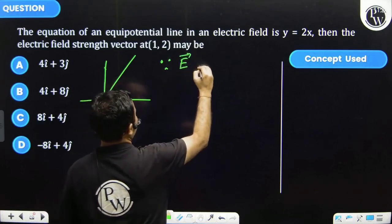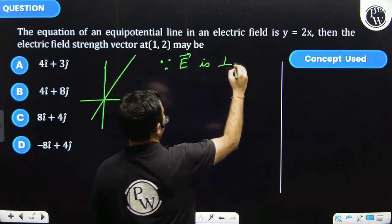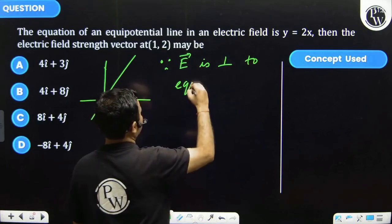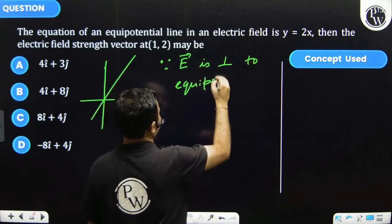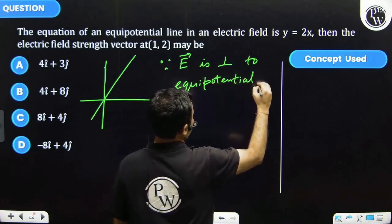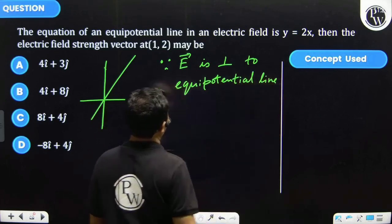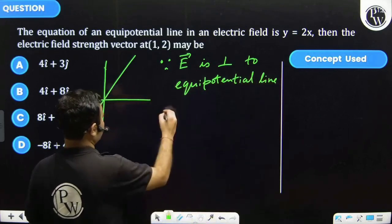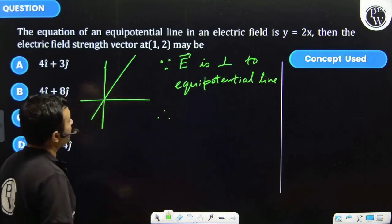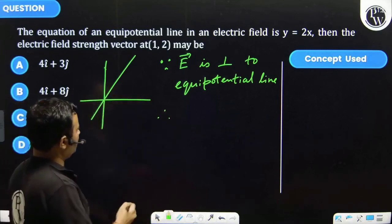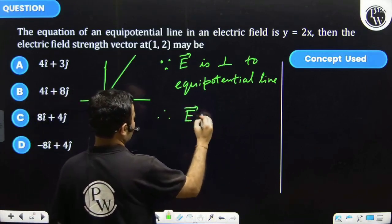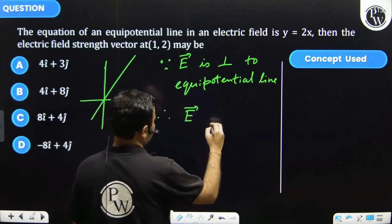The electric field is perpendicular to the equipotential line. Hence, the electric field vector is perpendicular to this line.